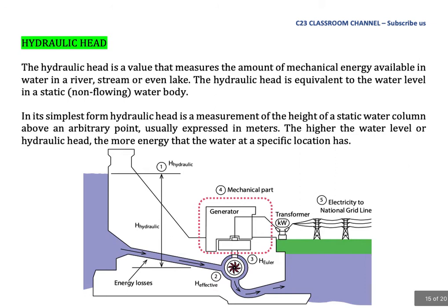The hydraulic head is a value that measures the amount of mechanical energy available in water in a river, stream, or even lake. The hydraulic head is equivalent to the water level in a static water body. In its simplest form, hydraulic head is a measurement of the head of a static water column above an arbitrary point, usually expressed in meters.